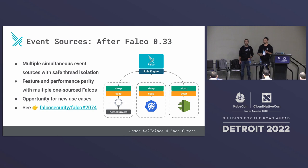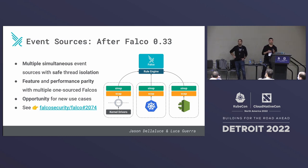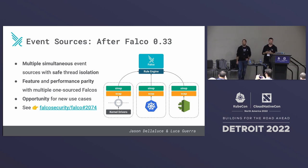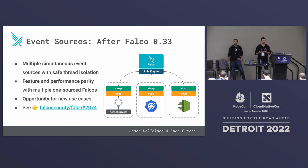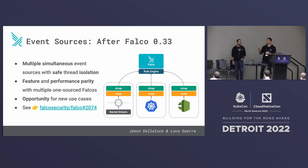Since version 0.33, which was released literally a couple of weeks ago, we introduced native support for multiple event sources in a single Falco instance running simultaneously. Events and security detections all run in an isolated and safe pattern of workloads with very little overhead, and there is total feature parity between having many Falco instances each configured with one event source and one single Falco running with both event sources. This creates a big new opportunity for new security use cases and new deployment best practices. We are proud to say we developed this feature totally in the open, with great participation from the community.